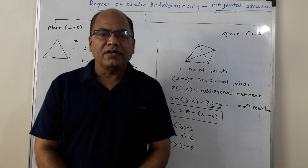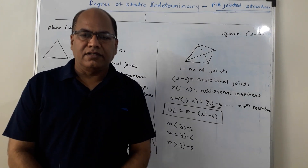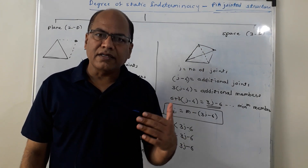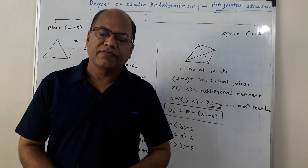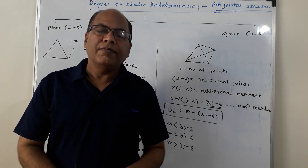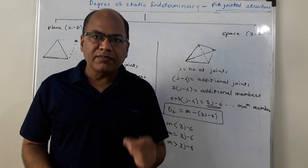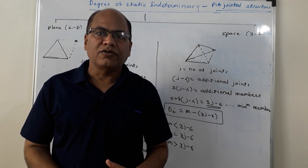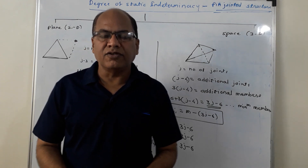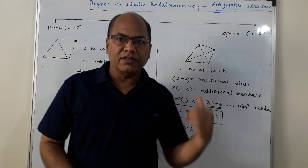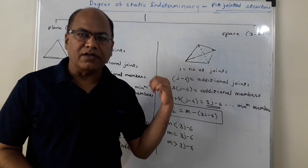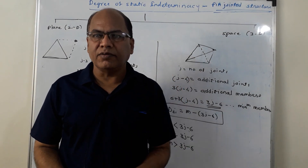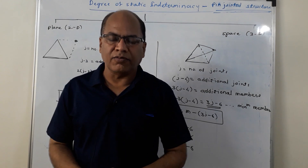In case of pin-jointed structures, the pin-jointed structure is statically determinate internally if it has just the minimum number of members required to preserve its geometry. So, in case of pin-jointed structures, we will have to work out the minimum number of members which are required to preserve its geometry.